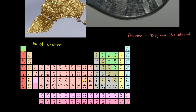The atomic number — the number of protons — is the number written at the top for each element in the periodic table. The number of protons is equal to the atomic number, and that number is there because it is the defining characteristic of an element.